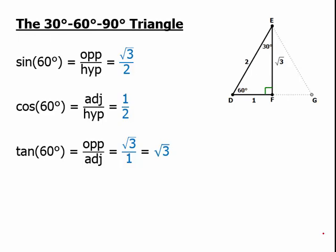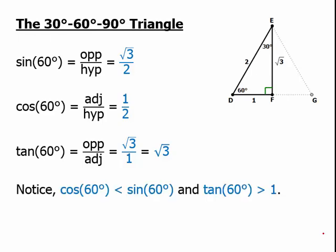So for 60 degrees, which is an angle greater than 45 degrees, notice that the sine has to be greater than the cosine, and the tangent has to be greater than 1. Both of those precisely because, for an angle greater than 45 degrees, the opposite is bigger than the adjacent.